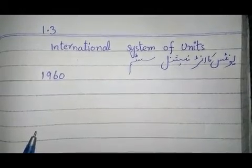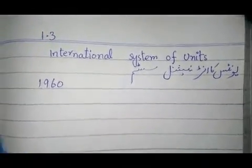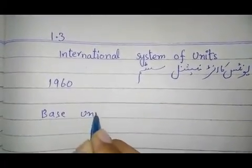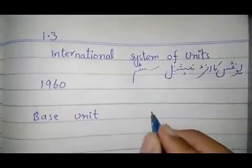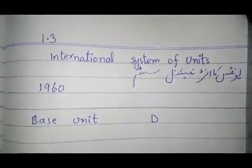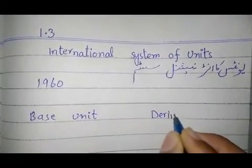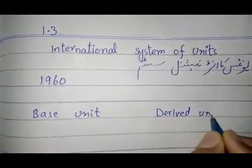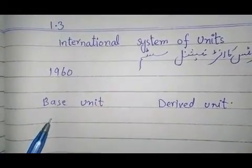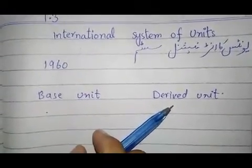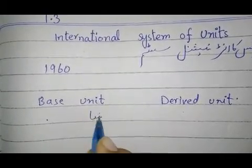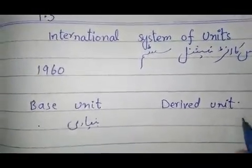There are base units and derived units. Base units are independent — they already exist and don't need help from any other unit; they can stand on their own. Derived units, on the other hand, need base units to be defined. They are expressed in terms of base units.